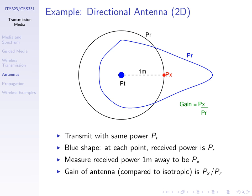Is PY greater than PR, less than, or equal to? Behind the antenna, in the opposite direction: we transmit with PT, and we said the blue antenna gives PR at a certain point. Therefore, measuring further away behind the antenna, it's going to be less than PR. So PY will be less than PR. In effect, the received power is less than what we would get from the isotropic antenna — the gain is smaller than one, or actually a loss.